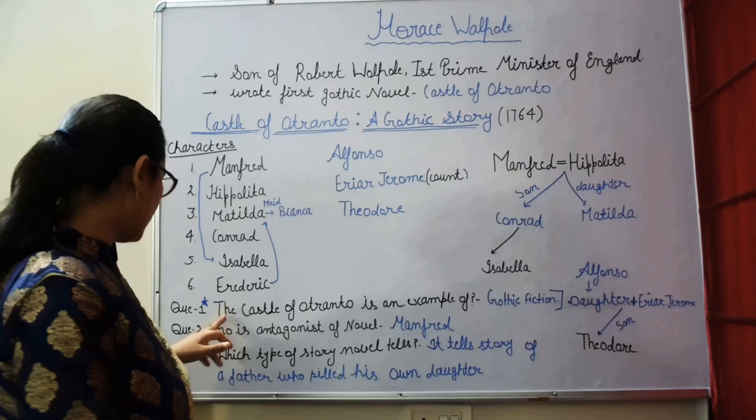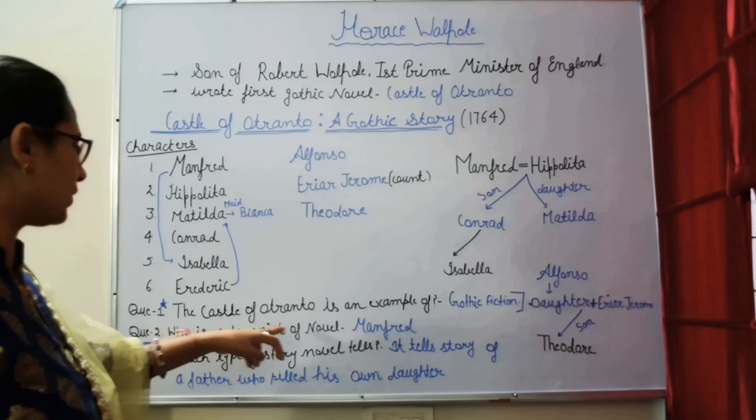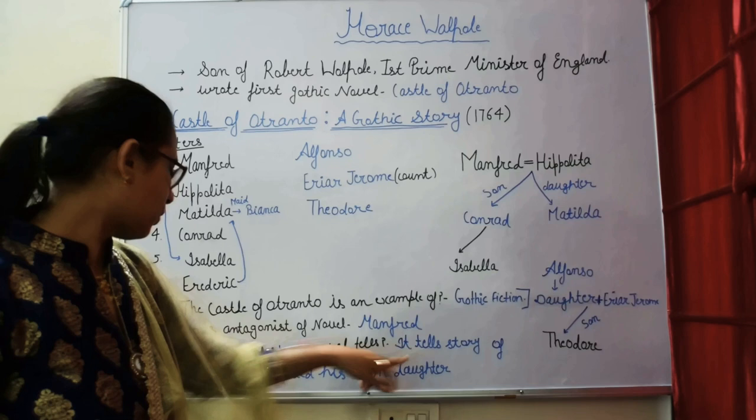Now for exam questions: Castle of Otranto is an example of what type of novel? It is a Gothic novel. Who is the antagonist of the novel? The antagonist is Manfred. What type of story does the novel tell? It tells the story of a father who killed his own daughter.